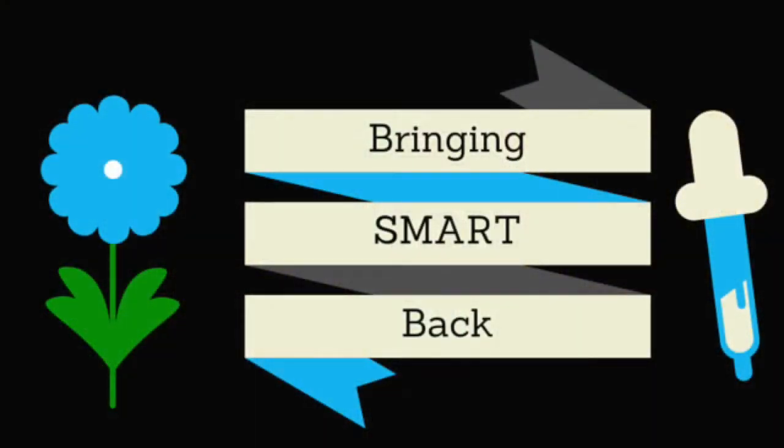I'm leaping for leap day! Hey everyone and welcome to Bringing Smart Back. So this year is a leap year. That means that there are 366 days instead of 365 days, but how does this happen?